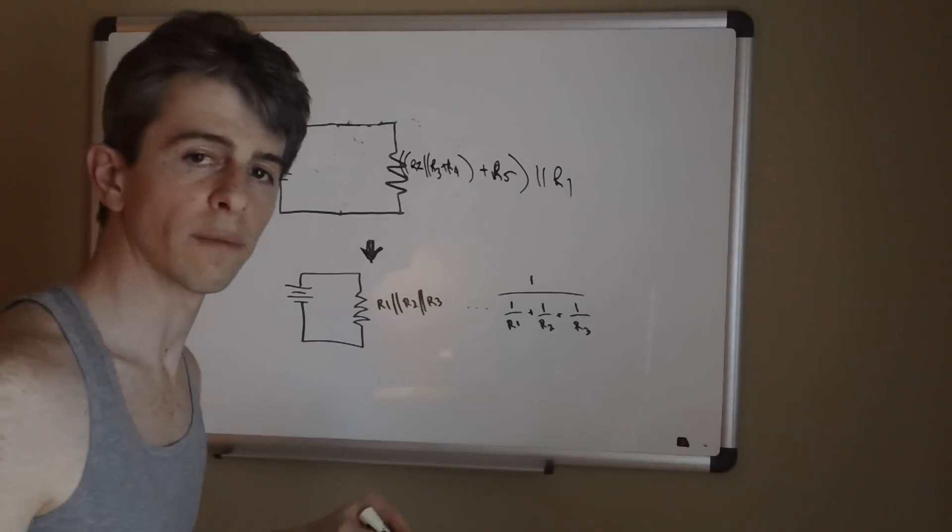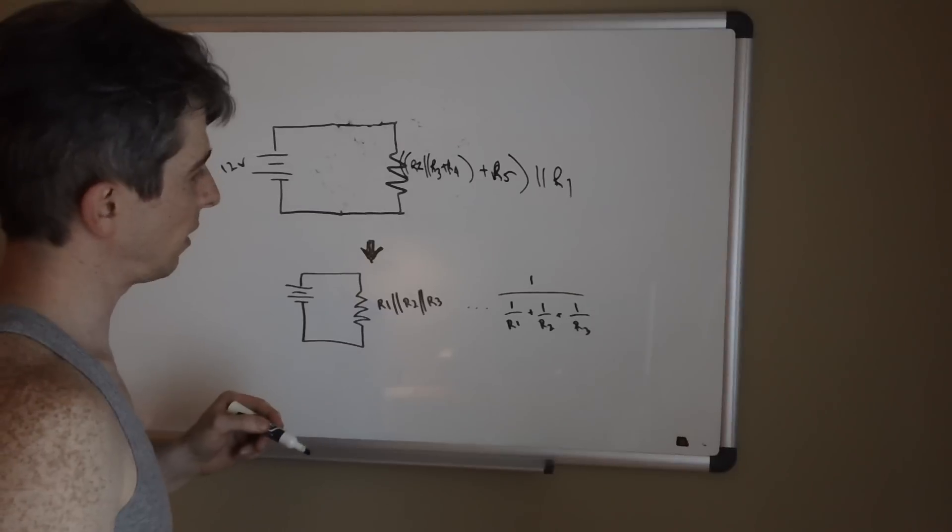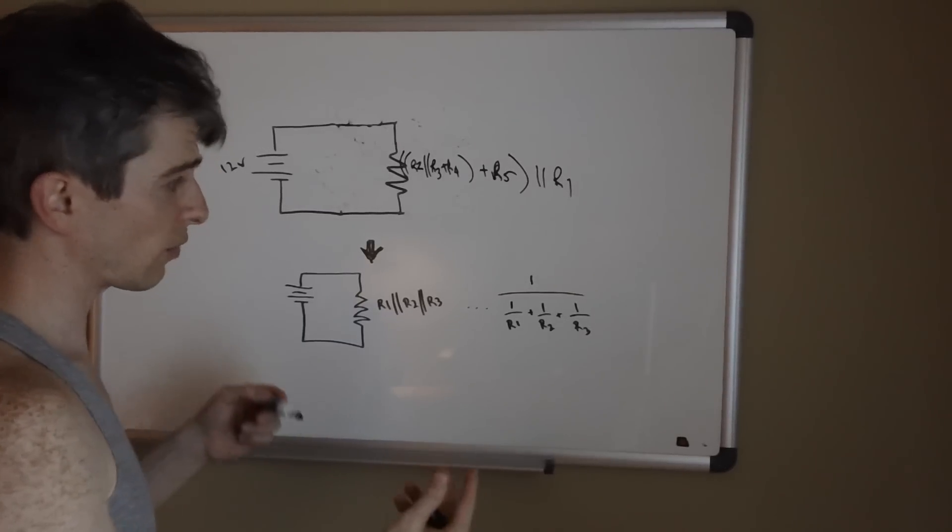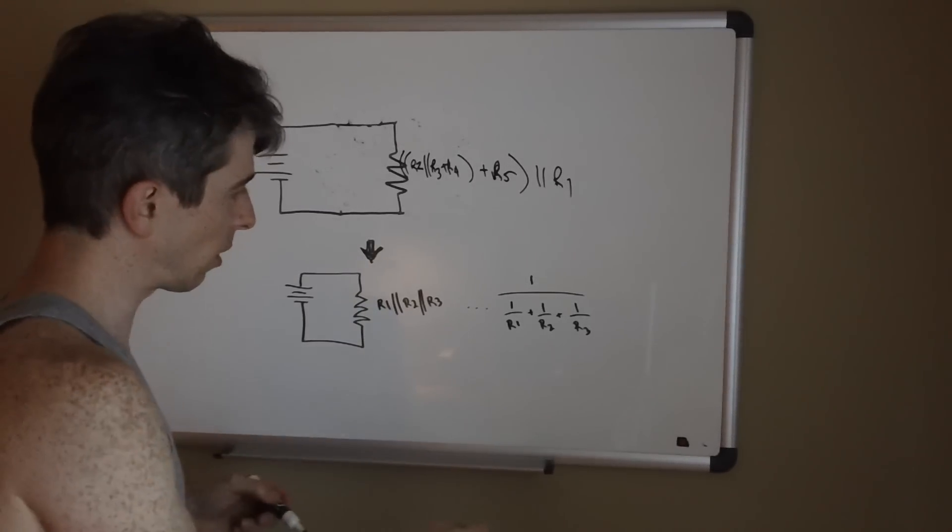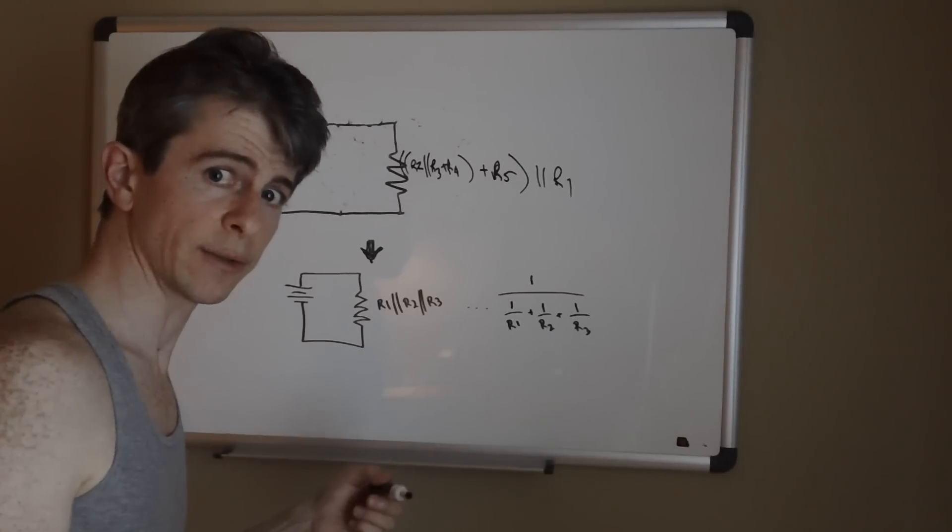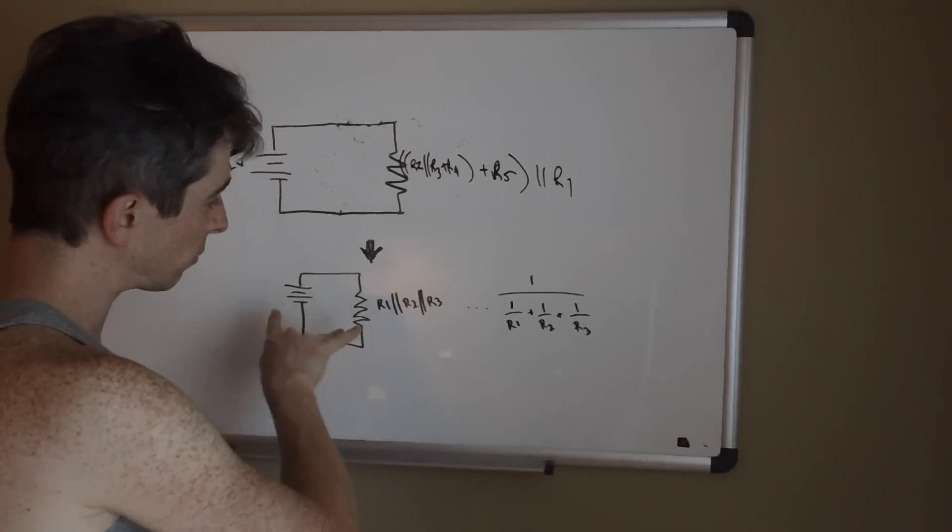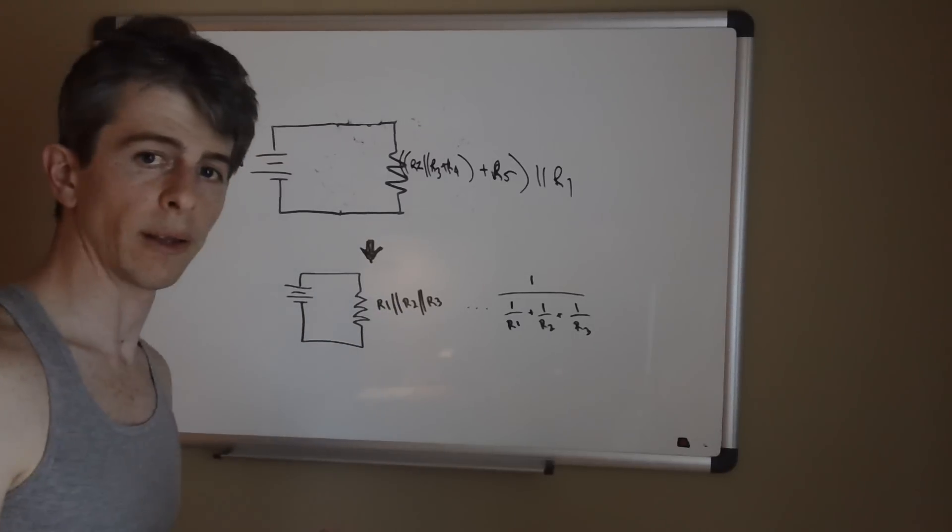But ultimately the only two principles that we use were: one, the simpler of the two, if you've got two resistors in series then you sum them up, and the second one being when you have branches in parallel how do you combine them.